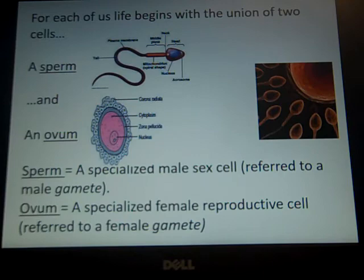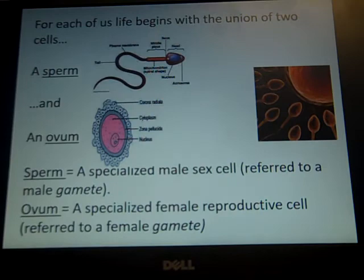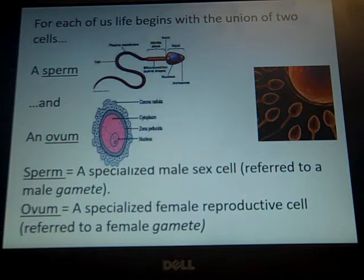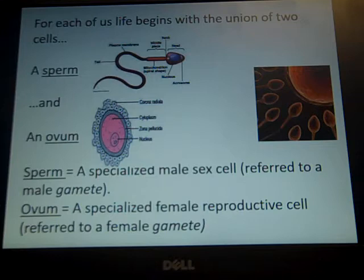Let's consider physical or biological development — just some basic terms. For each of us, life begins with the union of two cells: the sperm and the ovum. The sperm is the specialized male sex cell, and the ovum is the specialized female reproductive cell. You may be wondering why we're talking about this in a Personality of Psychology class. Well, how we develop our capabilities, our competencies, and our deficiencies all have some biological roots or bases, and it can start as early as this.